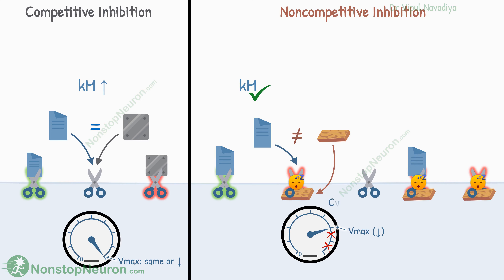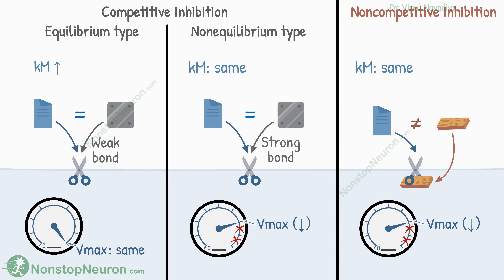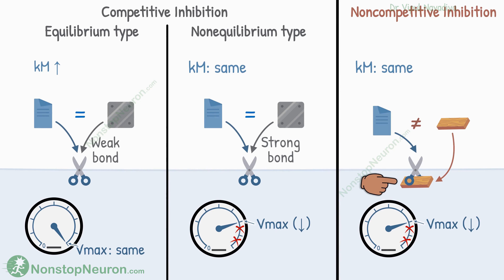For example, inhibition of cyclooxygenase by aspirin is of non-competitive type. To summarize enzyme inhibition: in competitive inhibition, the drug binds with the same catalytic site, whereas in non-competitive inhibition it binds with a different site. In equilibrium-type inhibition, the binding is weak so it can be reversed; in non-equilibrium type, the binding is strong so it cannot be reversed.